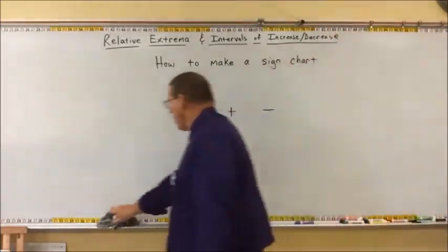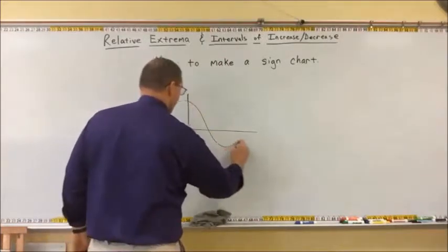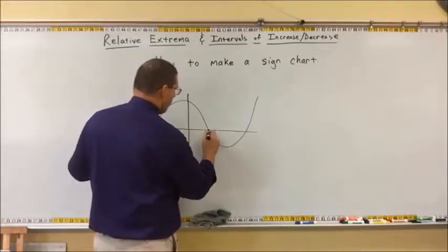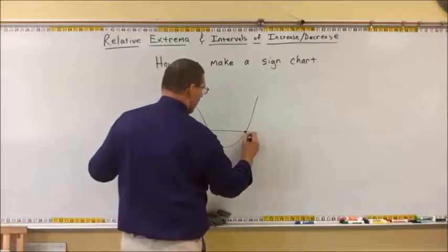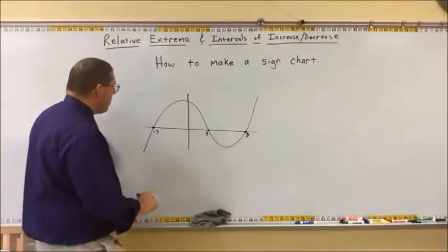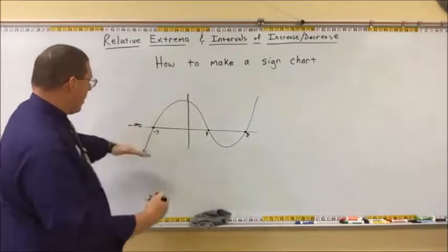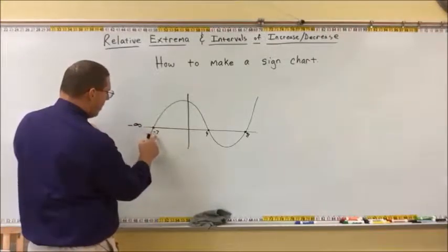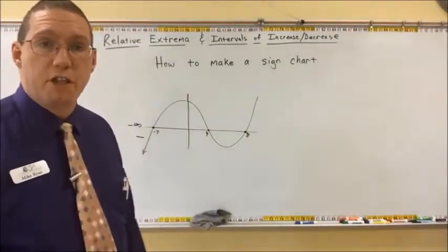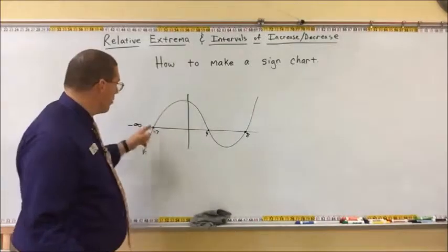Here's what I mean by that. Let's say that we have some arbitrary function, and let's say that it crosses over the x-axis at negative 7, at positive 4, and at positive 8. From negative infinity up until negative 7, the graph is below the x-axis. Therefore, from negative infinity up to negative 7, this graph has a negative sign — the output values are negative. At negative 7, the output value is 0 because it's hitting the x-axis.